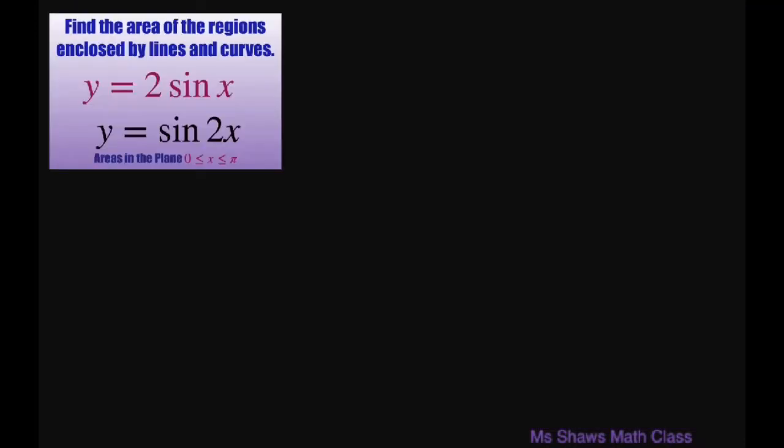So basically we're going to set these two equal to each other to find the intersection of the graphs or the curves. Since we're only going from 0 to pi, the only time these two are going to equal each other is when x equals 0 and x equals pi, because that means you'll get 0 equals 0.